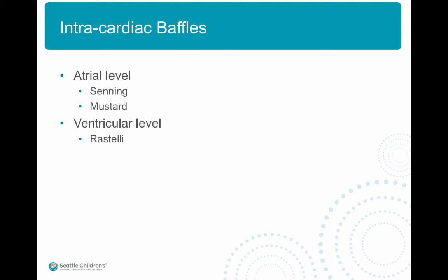The atrial level baffle was first described by Senning, where the patient's own tissue was used to create a baffle where the systemic veins would drain into the left atrium and the pulmonary veins were made to drain into the right atrium in patients with D-transposition of great arteries. Mustard performed a similar surgery using a pantaloon-shaped artificial baffle, with similar results.